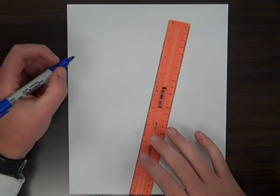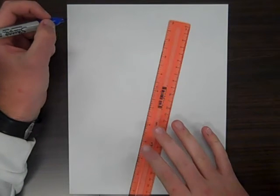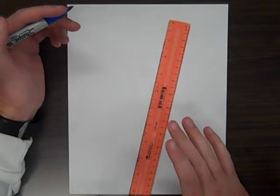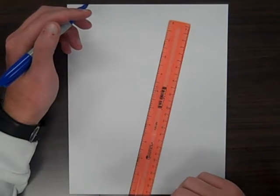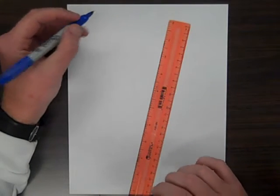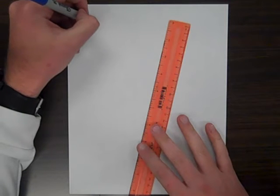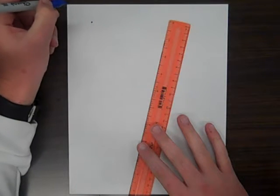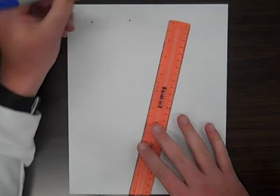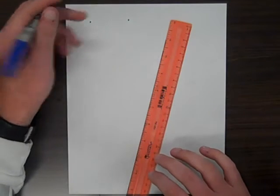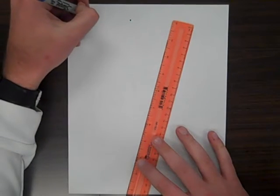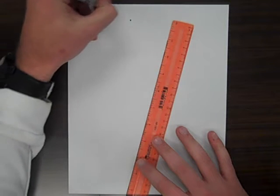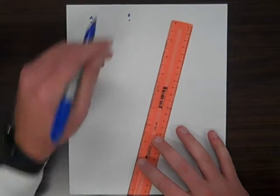We'll start with lines. First thing you need when you're going to draw lines are two points. Lines connect two points. They go through forever in both directions. First thing I want to do is draw my two points. I'll draw a point here and a point here. When we label our points, they are going to be labeled with capital letters. For simple purposes, I'll do point A and point B.